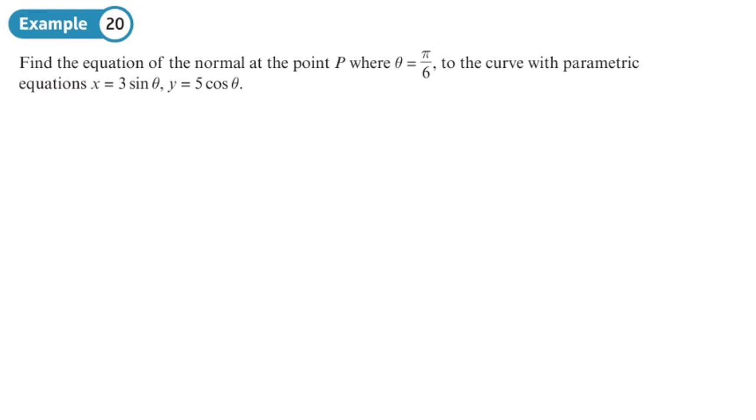This one: find the equation of the normal at point P where theta equals pi over 6 to the parametric equations. Okay, so we start this time by finding dx/d-theta, so it's not t this time, theta is the parameter that can change. That will be 3 cos theta, because it's just times by 3, whatever sine theta is differentiated, which is cos theta.